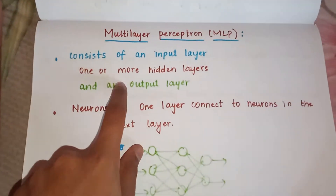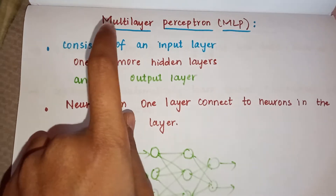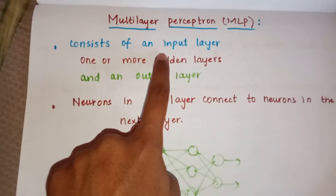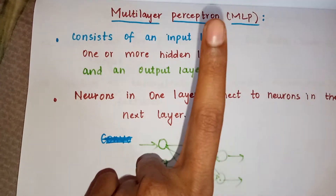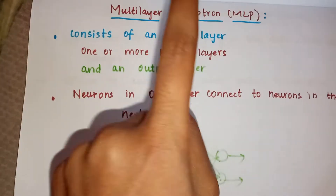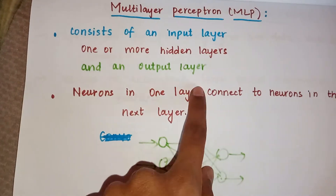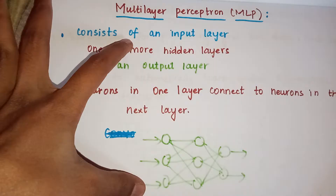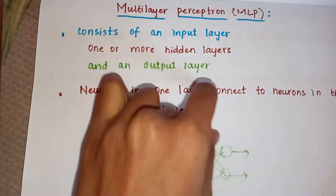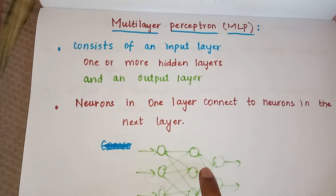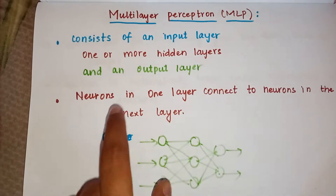Next one is multi-layer perceptron. Multi-layer perceptron consists of an input layer, one or more hidden layers, and an output layer. So one input layer, one or more hidden layers, and one output layer.